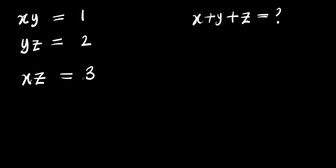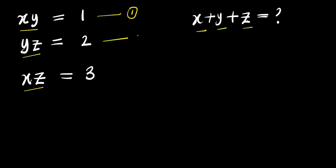Hello, how do we solve this? We have x times y equals 1, y times z equals 2, and x times z equals 3. So we are solving for x plus y plus z. We are going to call these equation 1, equation 2, and equation 3.